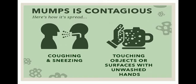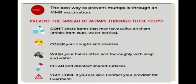How mumps spreads: it is spread through coughing and sneezing, and by touching objects or surfaces with unwashed hands. This is how mumps spreads from one person to another. For prevention, the best way to prevent mumps is through the MMR vaccination. Do not share items that may have saliva on them, cover your cough and sneeze, wash your hands often and thoroughly with soap and water, clean and disinfect surfaces, stay home if you are sick, and contact your provider for treatment.